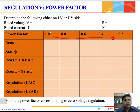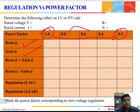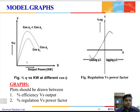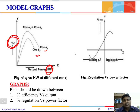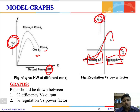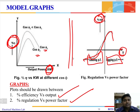For voltage regulation, change the power factor from 1 to 0.2 and at each power factor determine R·cosφ, X·sinφ, and then the voltage regulation for lagging and leading conditions using the formula I2(R·cosφ ± X·sinφ). Plot efficiency on the y-axis versus output power on the x-axis for different power factor conditions, and plot regulation on the y-axis versus power factor percentage loading to obtain the regulation curves for leading and lagging conditions.